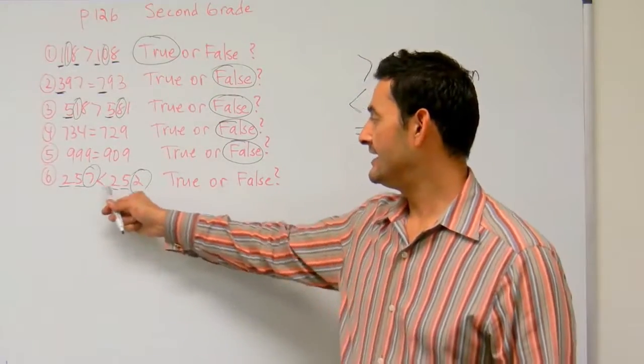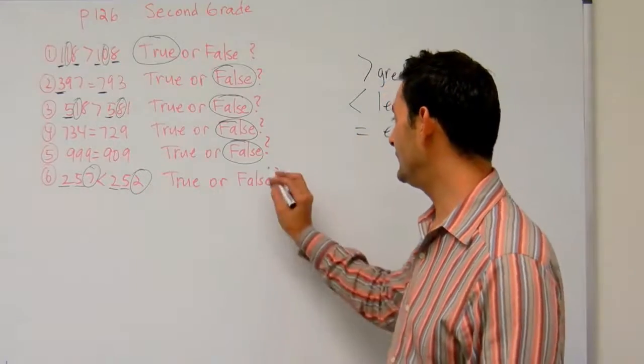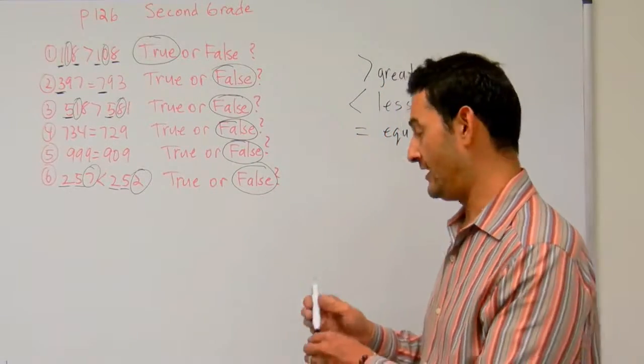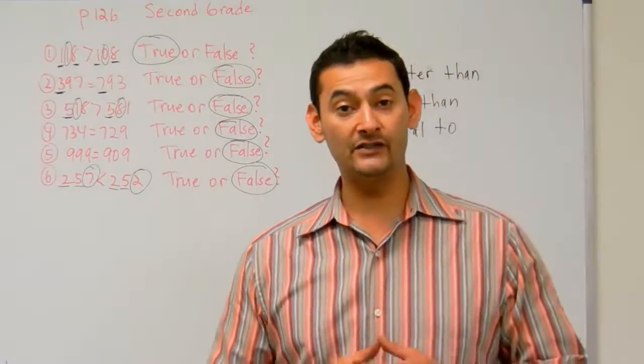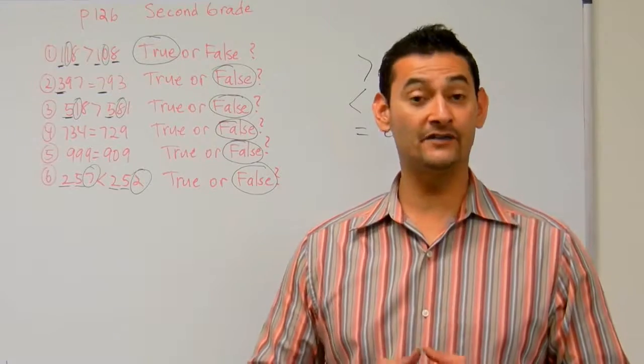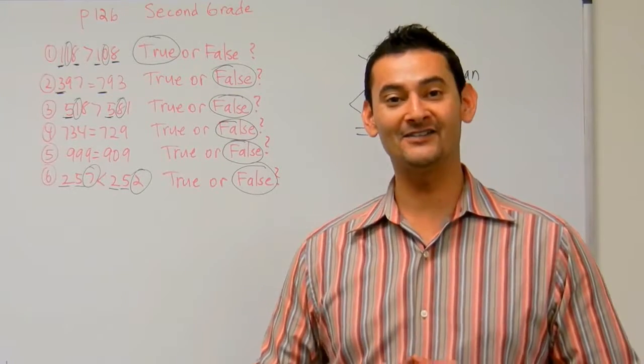So 257 is less than 252. That is absolutely false. So boys and girls, go ahead and work on sets 1 and 2 in your hybrid math workbook for second grade. And we'll see you very soon at the next video. Bye.